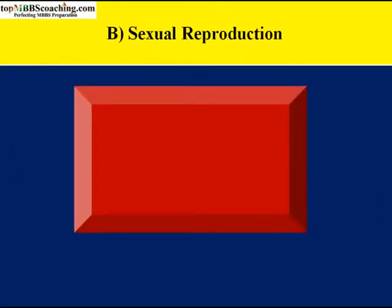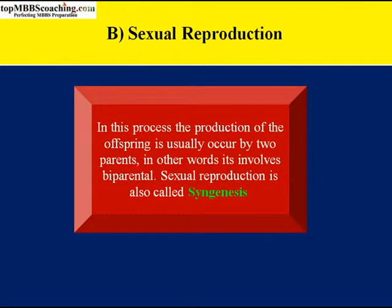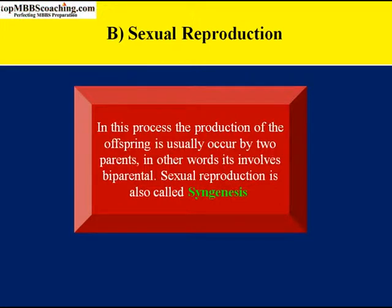The next type of reproduction is sexual reproduction. Sexual reproduction is the creation of a new organism by combining the genetic material of two organisms. The two main processes are: first, meiosis — which involves halving the number of chromosomes; and second, fertilization (syngenesis) — the origin of an individual from germ cells derived from both parents, not from either one alone.